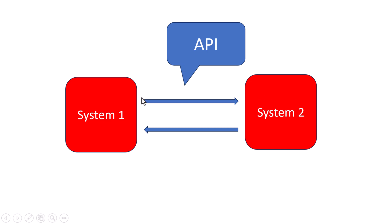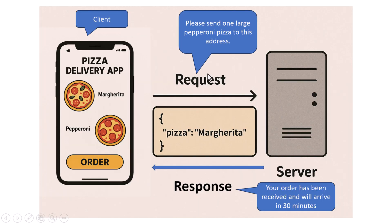Imagine you are using a mobile app to order a pizza. When you tap the button to place your order, the app sends a message to the restaurant's computer system. That message might say something like: 'Please send one large pepperoni pizza to this address.' The way that message is sent and the way the response is received — that communication is handled by an API.